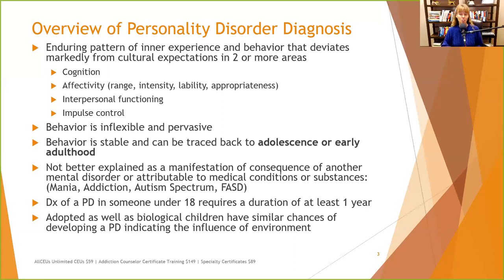So we're ruling out things like mania, addictive disorders, autism spectrum disorders, and fetal alcohol spectrum disorder. A diagnosis of a personality disorder in someone under 18 requires a duration of at least one year, and this pervasive pattern of inflexible behavior causing impairment or distress must have persisted for more than a year in someone over 18.